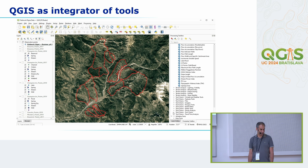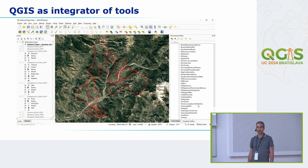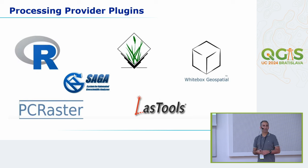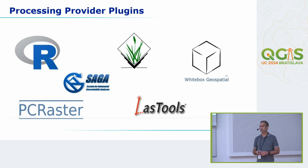With QGIS you can switch from one toolset to another — for example, you can use GRASS, SAGA, Whitebox Tools, R-Tools, etc. These are so-called processing provider plugins, and this causes some confusion for users because you're used to going to the plugins manager and installing a plugin, expecting it to work. But processing provider plugins often need an extra step because they link QGIS to third-party software. You need both the plugin and the third-party software.